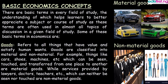Goods refers to all things that have value and satisfy human wants. Goods are classified into material and non-material goods. For example, things like cars, shoes, buildings, machines, etc., which can be seen, touched, and transferred from one place to another, are material goods. While services provided by lawyers, doctors, teachers, etc., which can neither be seen nor touched, are non-material goods.